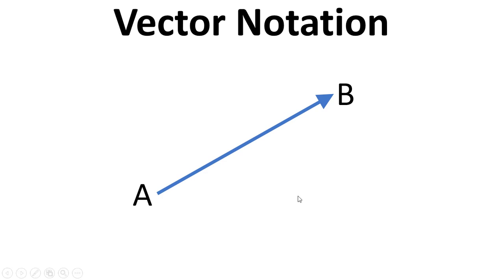In terms of vector notation, here is an arrow representing our vector from point A to point B. Now, point A is where the vector starts, and that's referred to as the tail. Point B is referred to as the head of the vector.